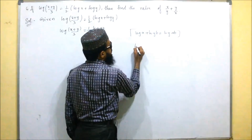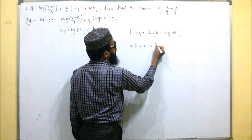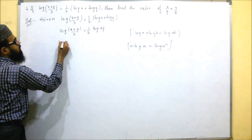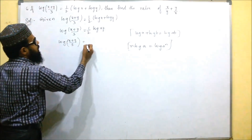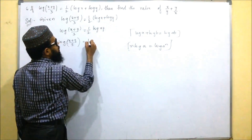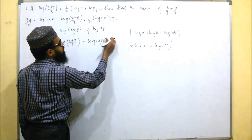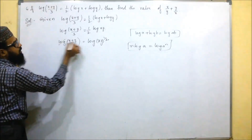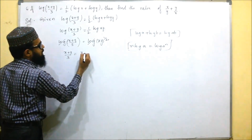We use another formula: n·log a = log(a^n). So the right side becomes log(xy)^(1/2). Then we can cancel the logs from both sides, and we get (x + y)/3 = (xy)^(1/2).